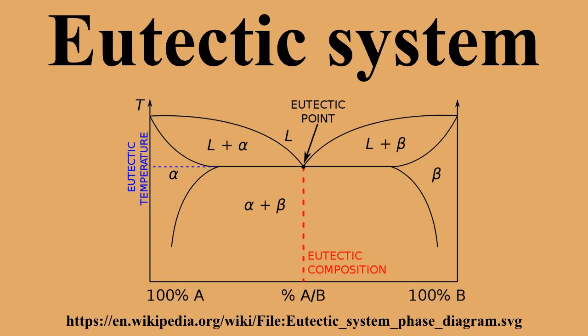Solar salt — 60% sodium nitrate and 40% KNO3 — forms a eutectic molten salt mixture used for thermal energy storage in concentrated solar power plants. To reduce the eutectic melting point in solar molten salts, calcium nitrate is used in the following proportion: 42% Ca(NO3)2, 43% KNO3, and 15% sodium nitrate.